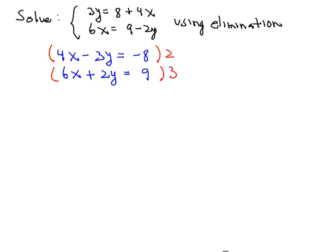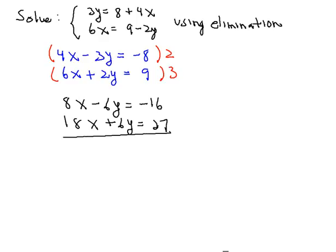So that will produce for us then in the first equation 8x minus 6y is equal to negative 16 and the second equation becomes 18x plus 6y is equal to 27. Now if we add the two equations together we'll end up then with 26x is equal to 11 or x then is equal to 11 all over 26.